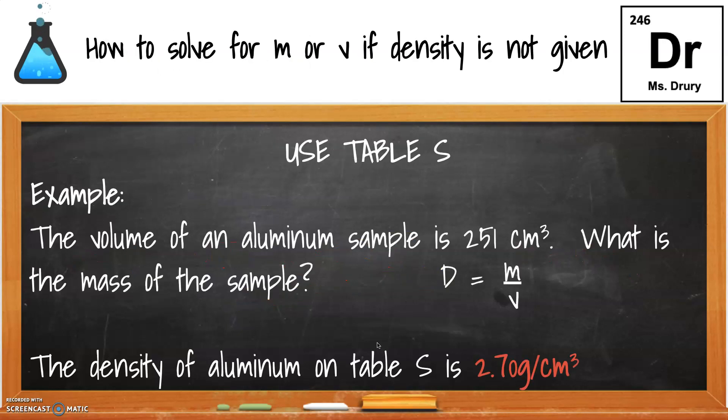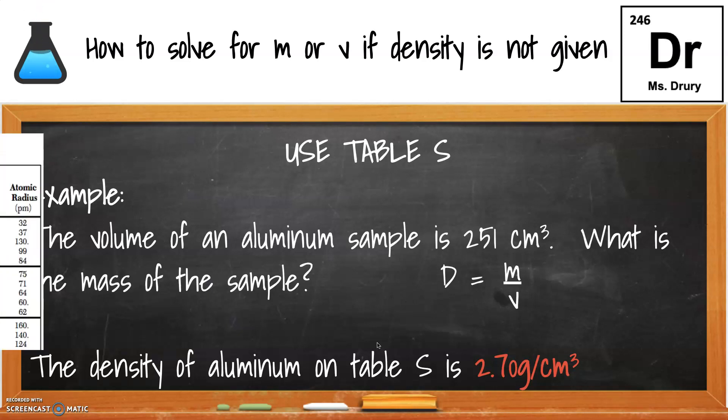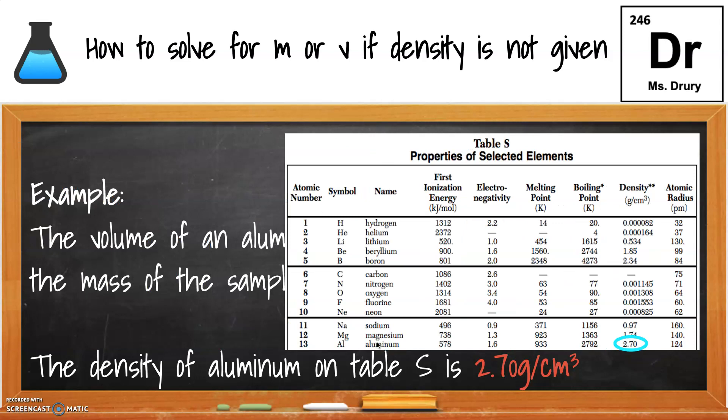So just one other type of question is how to solve for M or V if the density is not given. For example, if the volume of aluminum sample is 251, what's the mass? And you might say, I only have one number. How am I supposed to figure out both? So using table S, near the back of your reference table, you would look up that substance that they're talking about, and the density would be given, as you can see in the blue circle, 2.7.